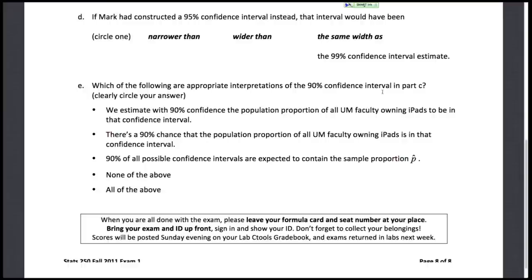Last couple of questions here. If Mark had constructed a 95% confidence interval instead, that interval would be what compared to a 99% confidence interval estimate? 95% is less confidence than 99%, and if you're less confident, you don't have to cover as many possible values. As confidence increases, z-star increases, making the interval wider. So 95% gives a lower z-star and thus a narrower confidence interval than 99%.